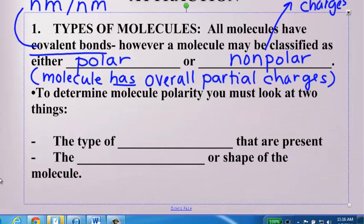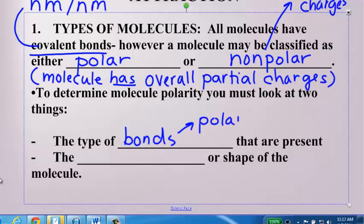To determine molecule polarity, you really need to look at two things. Number one, the type of bonds that are present. They're either going to be polar or nonpolar. Polar would be the EN difference does not equal zero, two different nonmetals. Nonpolar would mean the EN difference is zero, the same nonmetal.